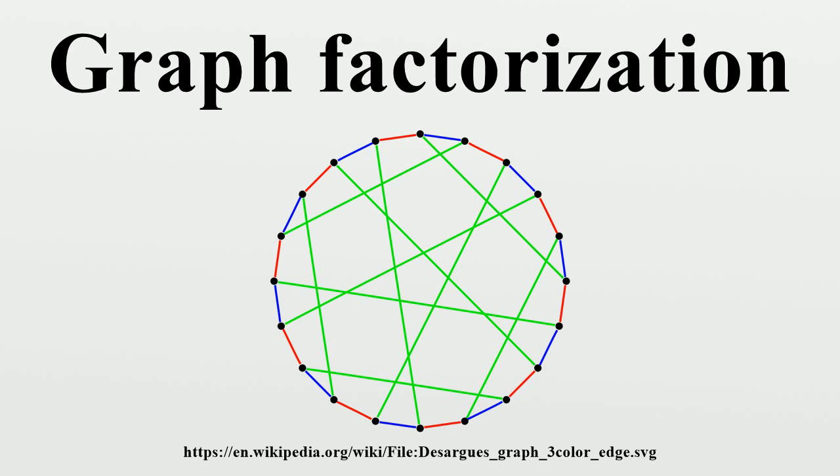The Petersen graph. Complete graphs: A one-factorization of a complete graph corresponds to pairings in a round-robin tournament. The one-factorization of complete graphs is a special case of Ranieri's theorem concerning the one-factorization of complete hypergraphs.